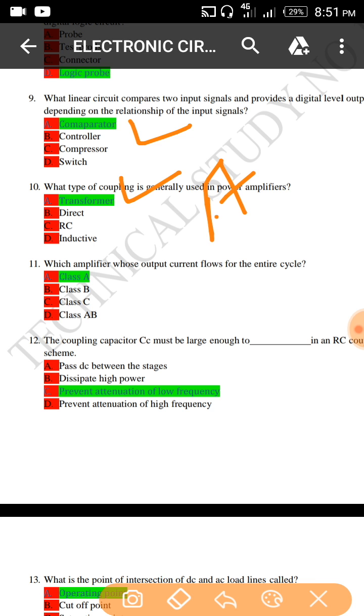Which amplifier whose output current flows for the entire cycle? This is a Class A amplifier, option A is the right answer.